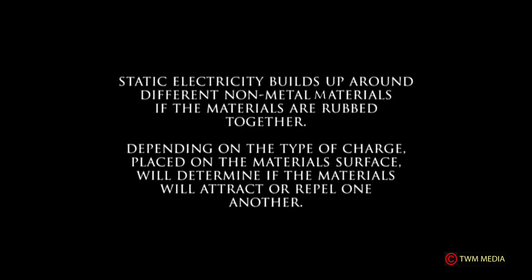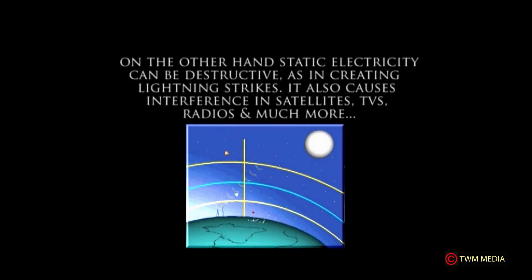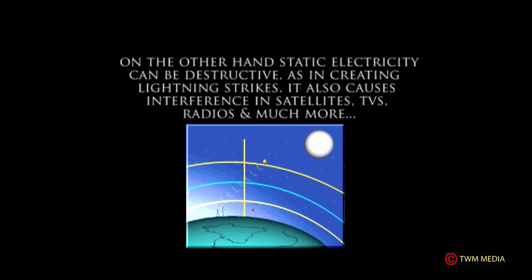Static electricity builds up around different non-metal materials if they are rubbed together. Depending on the type of charge placed on the material's surface, it will determine whether the materials attract or repel one another. On the other hand, static electricity can be destructive, as in creating lightning strikes. It can also cause interference in satellites, television, radio, and much more.